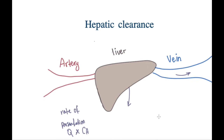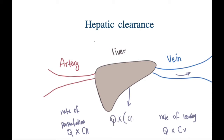On the other side, we have the rate of leaving, represented by Q — the blood flow — multiplied by Cv, the concentration of the drug inside the vein: how much drug remains after the liver has done its function. The rate of extraction that the liver performs is Q multiplied by CA minus Cv — the beginning concentration minus the end concentration — so how much entered minus how much is left. This determines how much the liver is working, how much it is clearing the body of the drug.